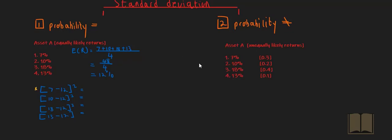It's worth noting that we square these deviations because negative differences will turn into a positive. So negative 5 squared gives you positive 25, negative 2 squared gives you positive 4, positive 6 squared gives you 36, and positive 1 squared gives you 1. If we add all of these up, it gives us a total squared deviation of 66. The variance is equal to the sum of the squared deviations divided by the number of data points, which is 4, giving you a variance of 16.5.